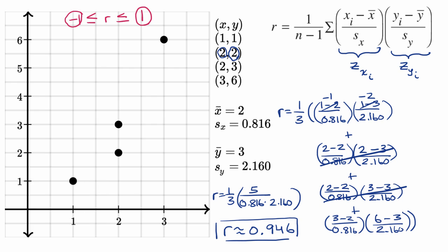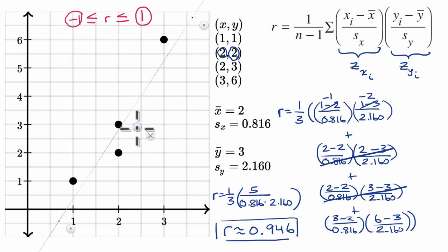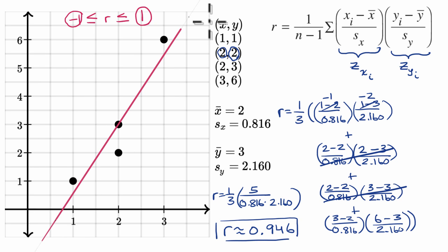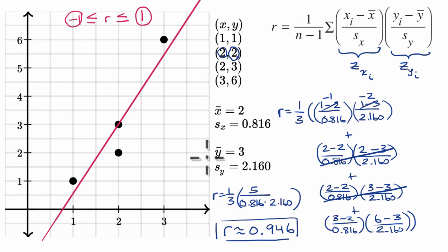I'm going to try to hand draw a line here. It turns out that our least squares line will always go through the mean of x and the mean of y — so the mean of x is two, and the mean of y is three; we'll study that in more depth in future videos. This actually does look like a pretty good line. You can see that I can draw a line that gets pretty close to describing the data. It isn't perfect — if it went through every point, then I would have an r of one — but it gets pretty close.